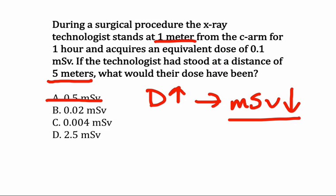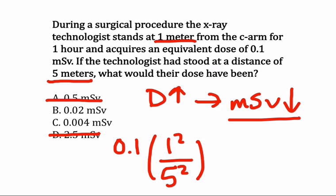A could not be correct, and D could not be correct, because both of those are larger than the initial exposure. So we start with the initial exposure, the initial dose of 0.1, and again, we multiply it by a square of the distances, 1 squared over 5 squared, and that gives us a new dose of 0.004 millisieverts. And so we know the answer has to be C.